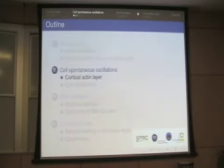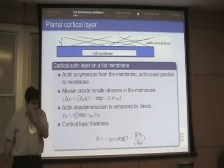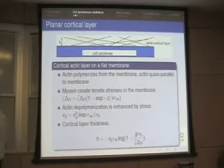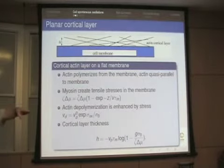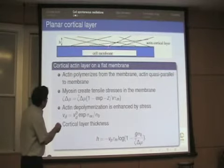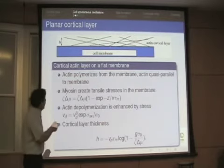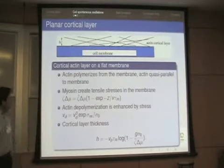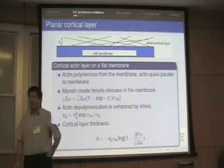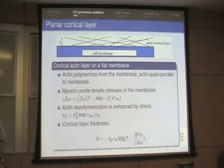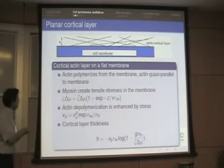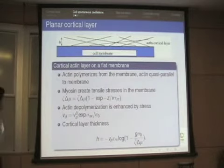Now I want to talk about these oscillations. Let me describe how to model the cortical actin layer. My first description is extremely naive: I assume the cell membrane is flat. Two things are known: actin filaments grow from the surface by adding monomers, and they are almost parallel to the surface but randomly oriented in the plane — a two-dimensional isotropic orientation, all nearly parallel to the surface.